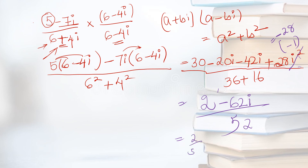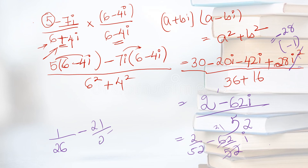So you write 2 over 52 minus 62 over 52 i. Now simplify: 2 over 52 gives 1 over 26, and negative 62 over 52 simplifies to negative 31 over 26. So you write 1 over 26 minus 31 over 26 i. That will be your answer.